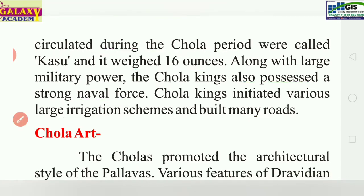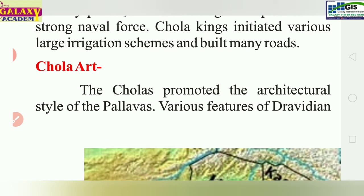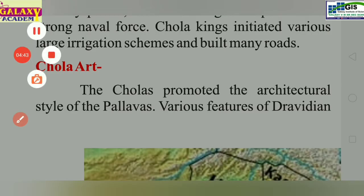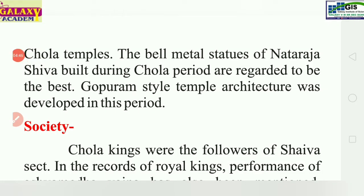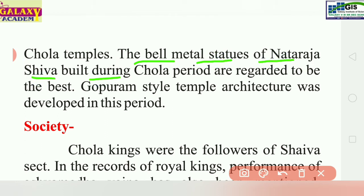Regarding Chola art, the Chola promoted the architectural style of the Pallavas. Various features of the Dravidian Chola temple were distinct. The bell metal statues of Nataraja — a form of Shiva — built during the Chola period are regarded as the best creations of that era.